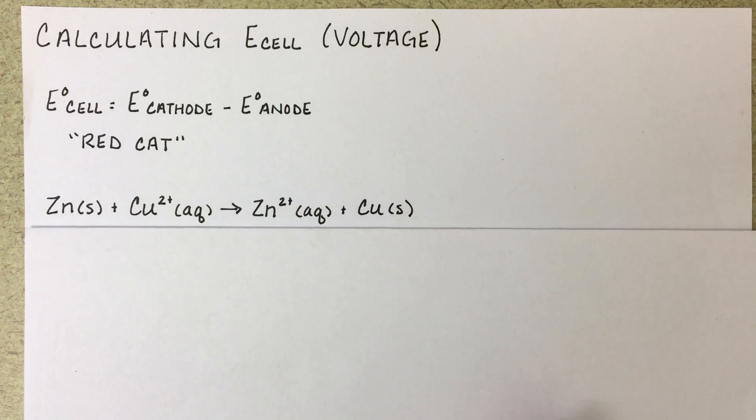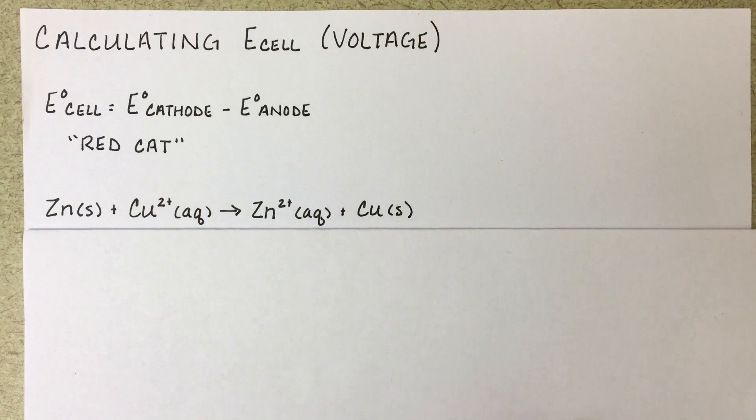So let's consider, for example, a voltaic cell made from zinc and copper-2 ions.